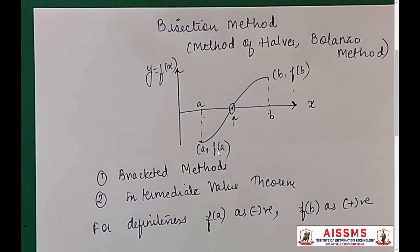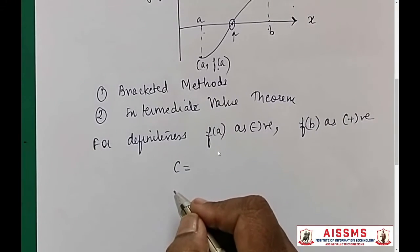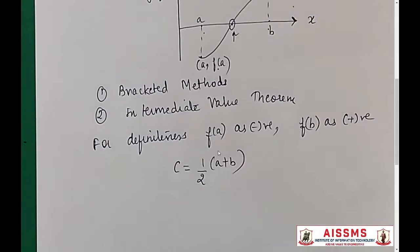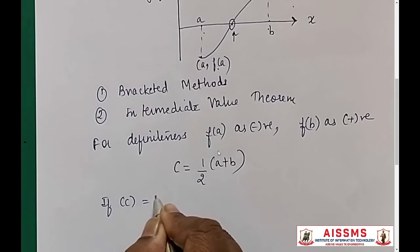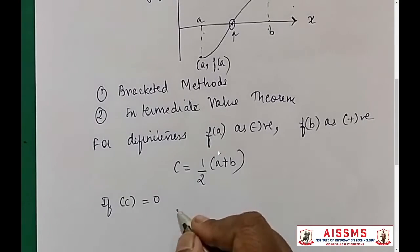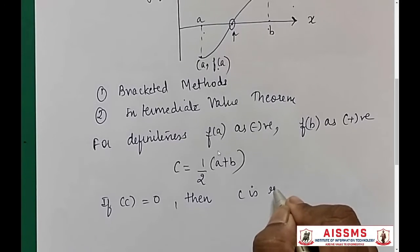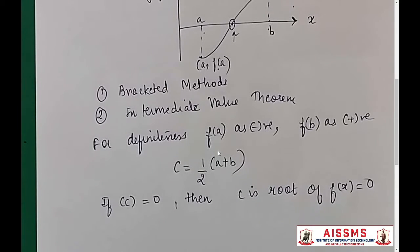So how do we find the first approximation to the root by the bisection method? We find c = (1/2)(a + b). If f(c) = 0, then c is the root of f(x) = 0.